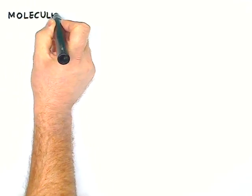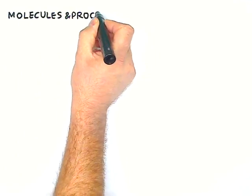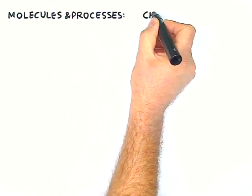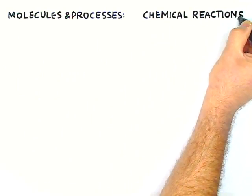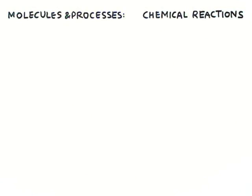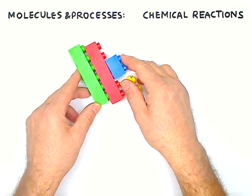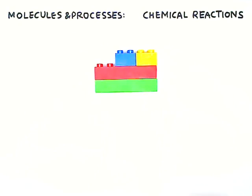Most processes that concern molecules involve chemical reactions. Let's take a look at what they actually are. There are essentially two kinds. In the first kind, smaller entities — atoms or molecules — are put together, built to give you something bigger.